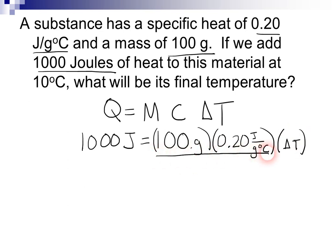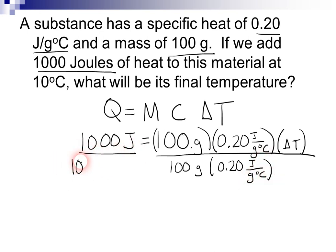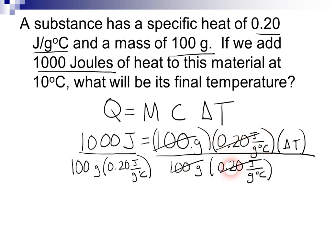We're going to have to divide both sides by 100 grams and by 0.2 joules per gram degree Celsius. If I do it on the right side, I have to do it on the left. The 100 grams cancels on the right side, as does the 0.2. My joules cancel, and so do the grams, so I'm left with degrees Celsius. When I do the algebra on this, I get an answer of 50. So delta T equals 50 degrees Celsius.